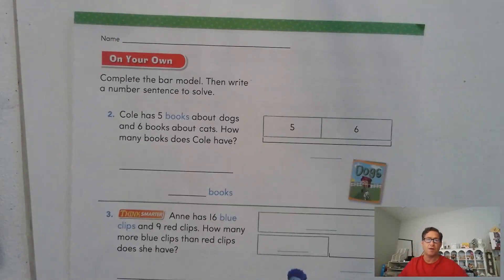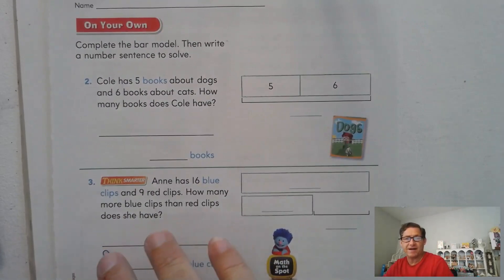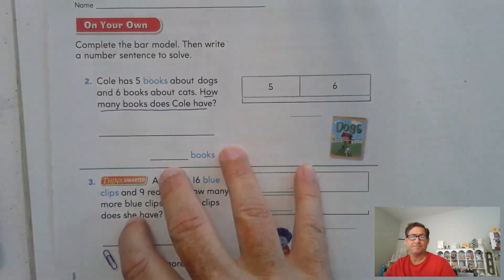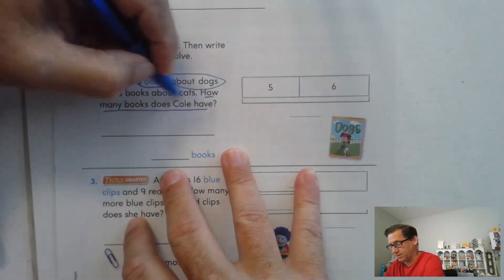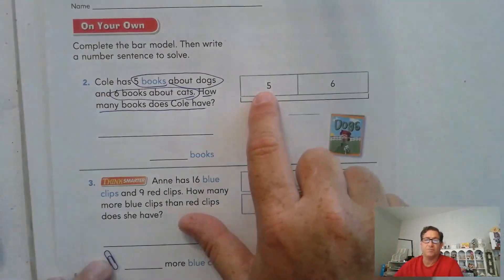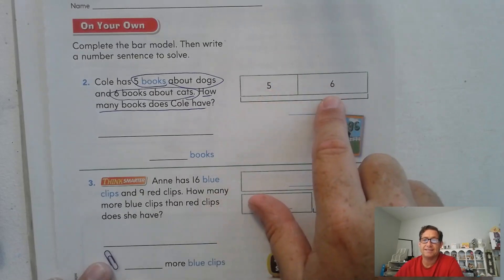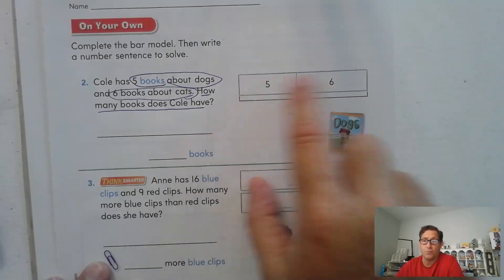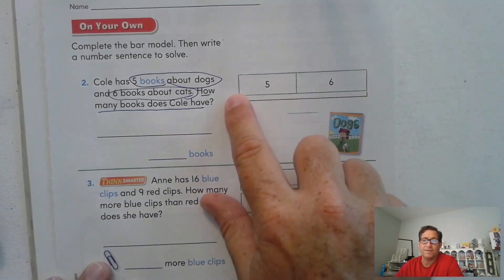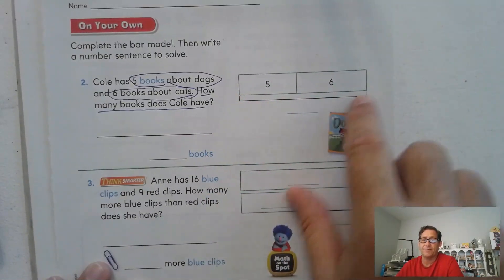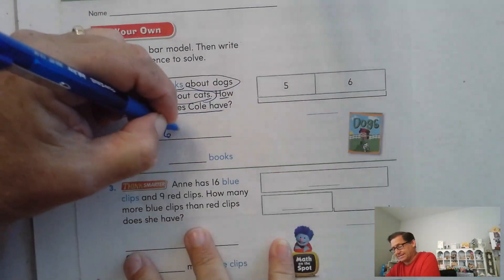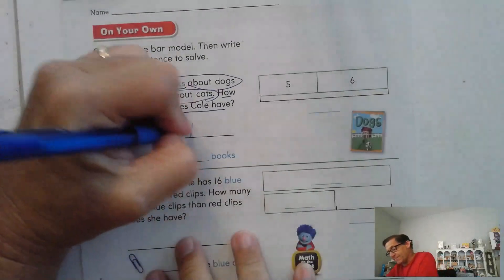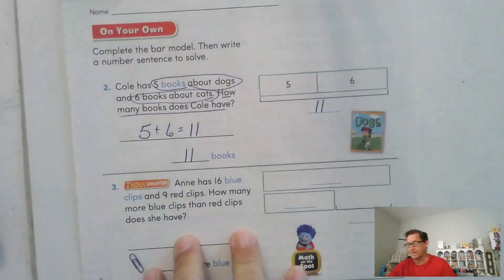All right. 151. Complete the bar model and then write a number sentence to solve. Cole has 5 books about dogs and 6 books about cats. How many books does Cole have? So 5 books about dogs, 6 books about cats. They're side by side. So that means it's basically an addition problem, right? We know both the numbers. We want to know what these two numbers are together. So 5 plus 6 equals what? Well, 5 and 5 is 10 and one more would be 11. So he has 11 books.